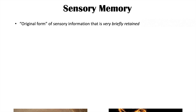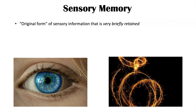Sensory memory is essentially the original form of sensory information that is very briefly retained. For example, if we look at an object, there is a very brief original form of that information being retained. A great example is when a light stick is moved around very quickly — it looks continuous, although it is not. That perceived continuity of the light is due to that very brief retention of sensory information.